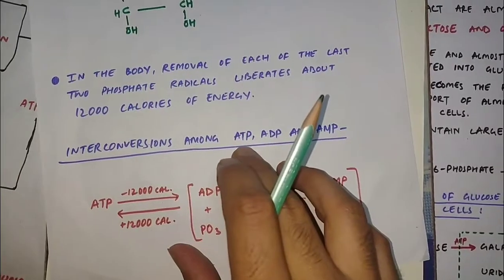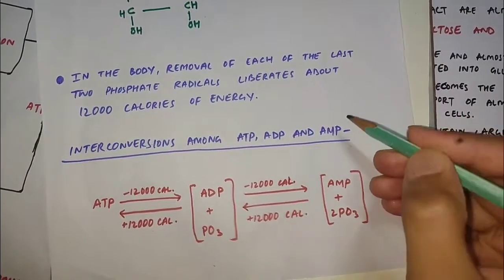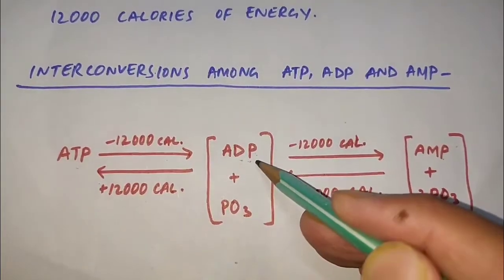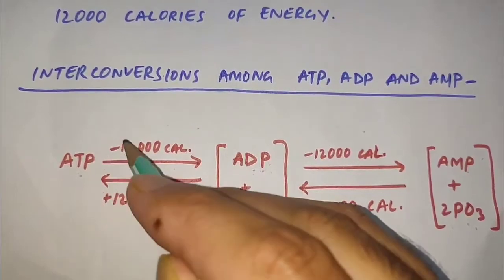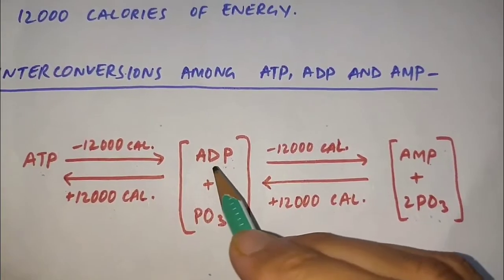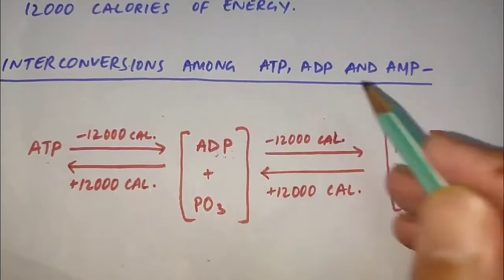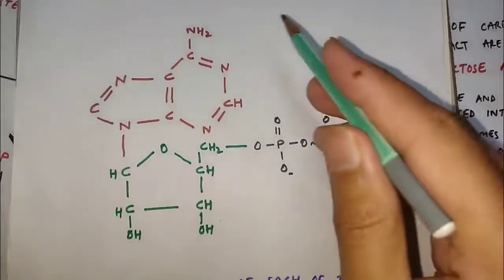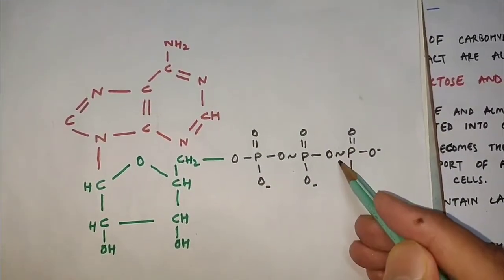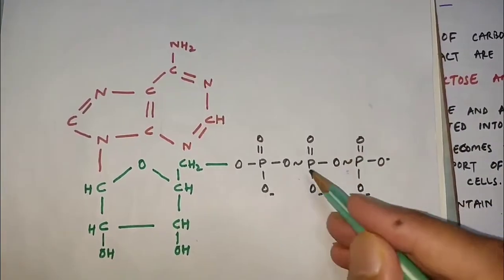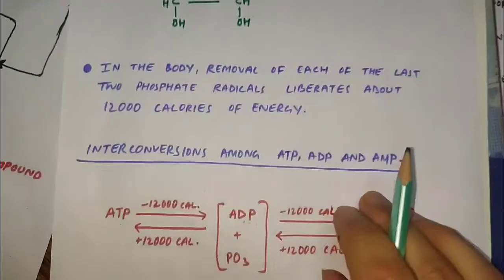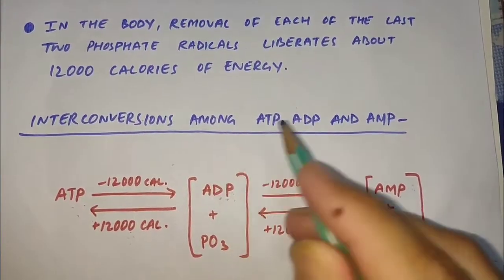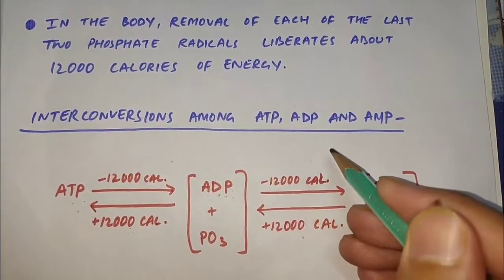Now let's look at the interconversion among adenosine triphosphate, adenosine diphosphate, and adenosine monophosphate. First, there is breakdown of ATP and it changes into ADP, releasing 12,000 calories of energy — the minus sign indicates release of energy. Then ADP breaks down into adenosine monophosphate, again releasing 12,000 calories of energy.